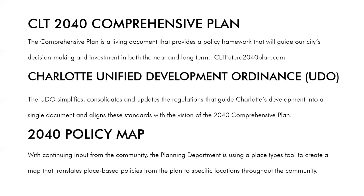A few other important planning-related items: for the last several years the city of Charlotte has rewritten its zoning and development ordinances into a combined Unified Development Ordinance. The UDO simplifies and consolidates while updating regulations to help guide Charlotte's development for the future. Associated with that is the 2040 Comprehensive Plan — a living document providing a policy framework guiding the city's decision makers for investment in both the near and long term. There's also the 2040 Policy Map, a future land use map identifying land uses most suitable for future development.